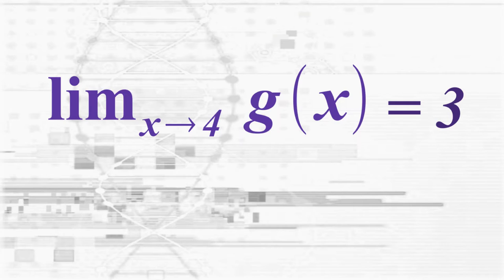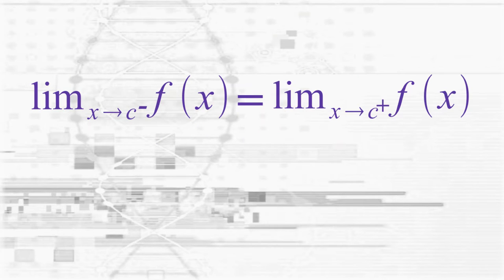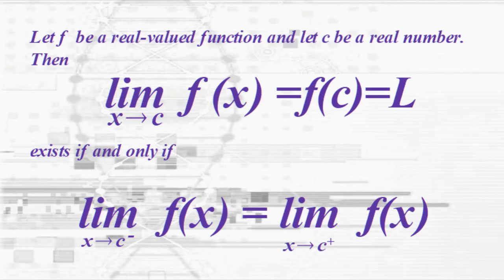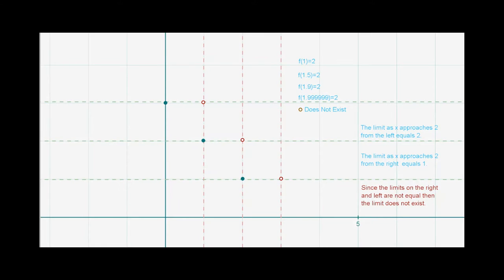Suppose we are given: the limit as x approaches 4 of g(x) = 3. This means that as x approaches 4 from the left, the limit of g(x) = 3, and similarly from the right. If these two equations are true, the limit exists — creating the formal definition of a limit: if the left and right sides are equal, the limit exists; if not, it does not exist. It's clear that as x approaches 2 from the left, the y-value limit is 2, and from the right it is 1. If limits on either side of 2 are not equal, the limit does not exist. However, if x actually equals 2, then the answer is 1.